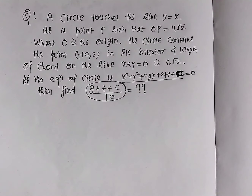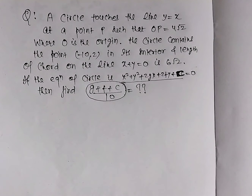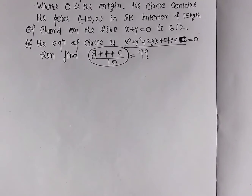वो circle निकालना है जो y = x को उस point पर touch कर रहा है जिसका origin से distance 4√2 है। उस circle के अंदर (-10, 2) interior point होना चाहिए, और line x + y = 0 पर उस circle का chord length 6√2 है।